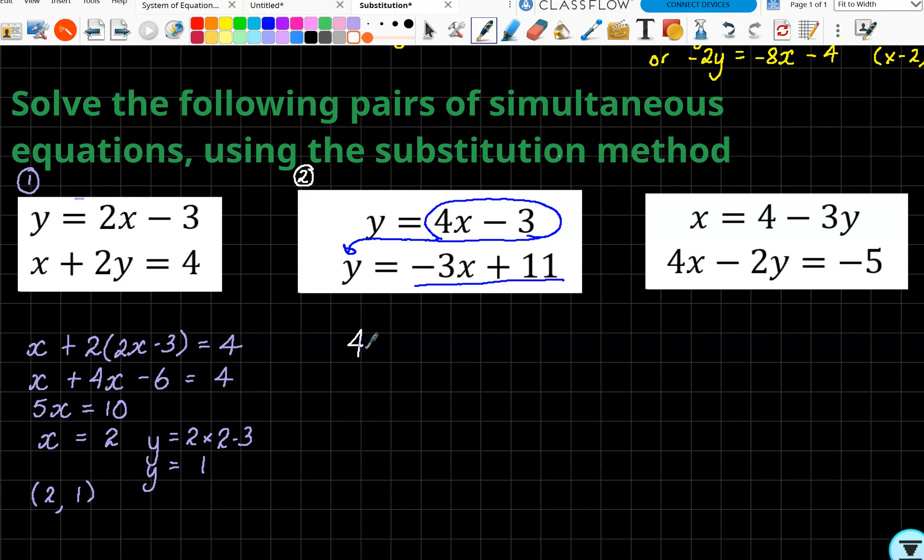Here we go: 4x - 3 has to equal -3x + 11. So all we're doing now is doing a little bit of algebra solving—get the x's on one side, non-x's on the other, and we're good to go. So let's go to the left: how do I get rid of a -3x? We're going to add 3x. So that's going to be 7x. And how do I get rid of a -3? You guessed it, add 3. 11 plus 3 is 14, and 2 seems to be a handy little option here.